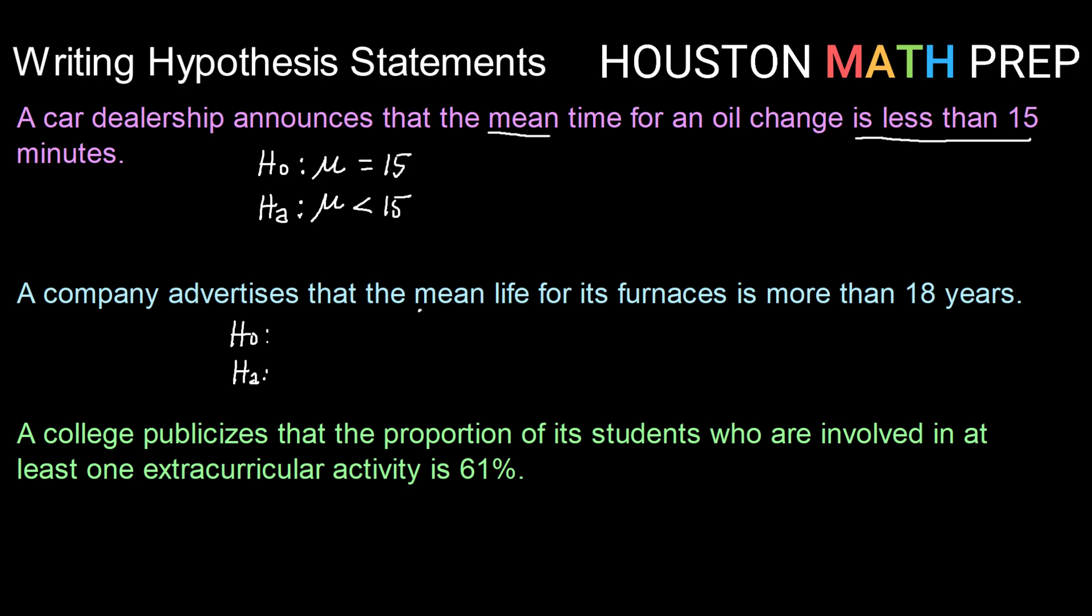So here again, we're working with a mean. So I'm going to have mu as my parameter in both statements. I know that my null hypothesis has to be an equality statement. So I'm going to have mu equals 18 years. And the claim that the company is making is that its furnaces last more than 18 years. So in this case, this would be greater than 18.